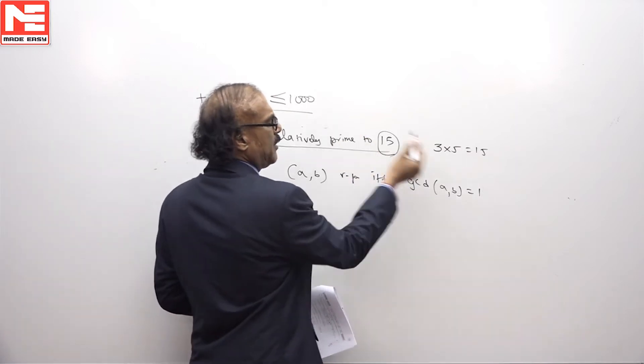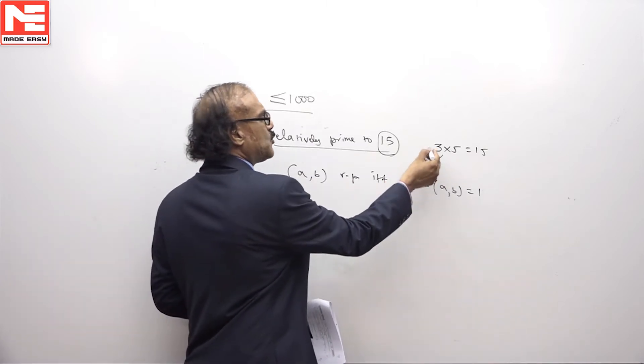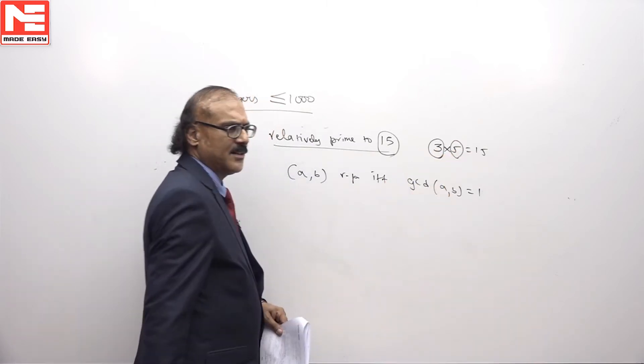For GCD of some number with 15 to be equal to 1, it is necessary that the number should not be divisible by 3 or 5.